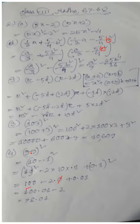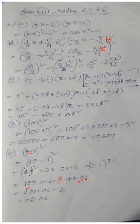So we have 100 + 0.01 − 2. Since 100 minus 2 equals 98, the final answer is 98.01. So 9.9 whole square equals 98.01.